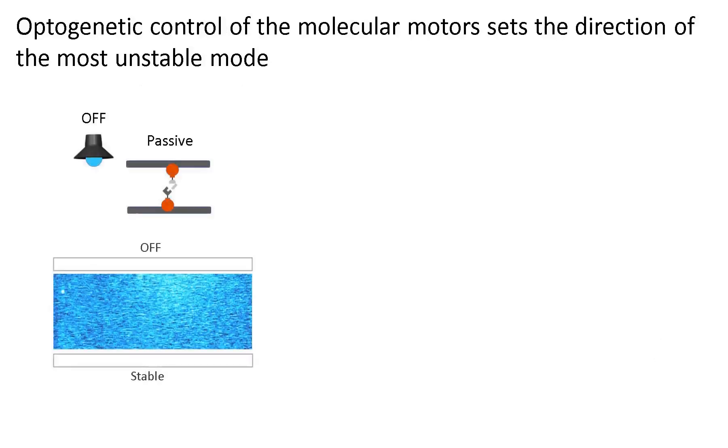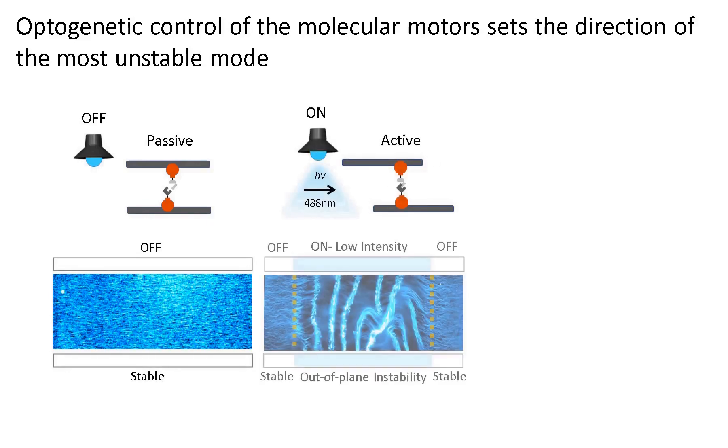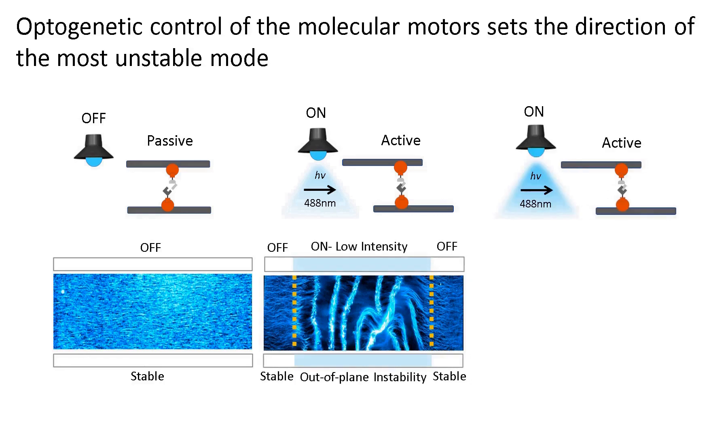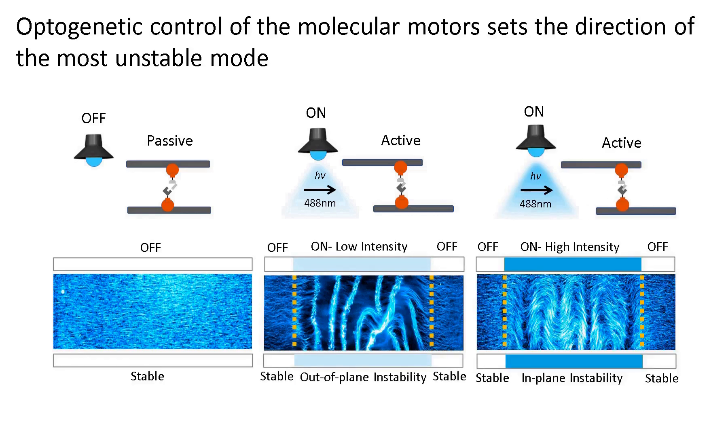Here we show that the network is stable and stays flow aligned in the absence of light, when motors do not dimerize. Then at low light intensity, the network buckles out of plane. Increasing the light intensity induces a transition to an in-plane instability. The experiments demonstrate how to spatiotemporally control the emergent dynamics of microtubule-based active matter.